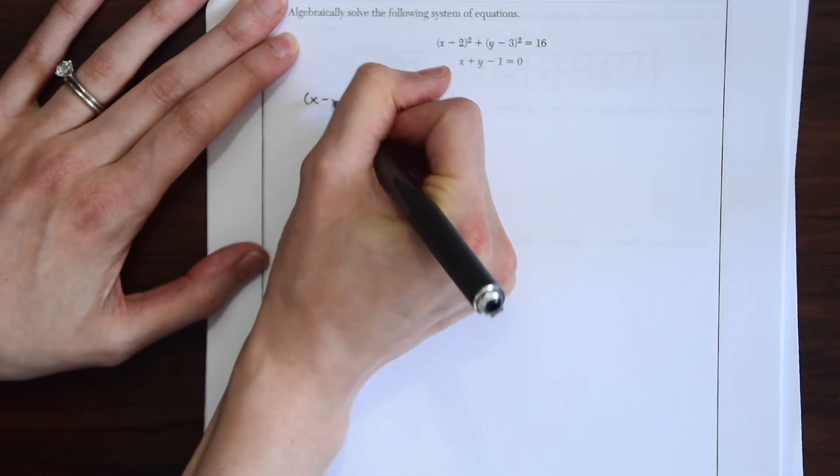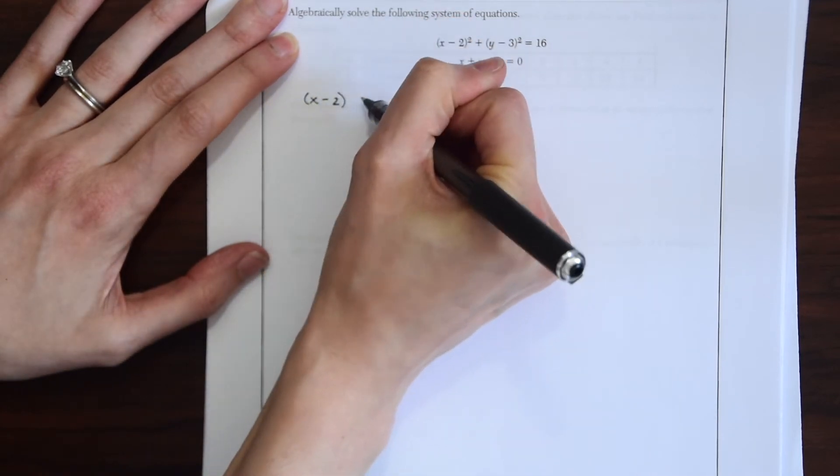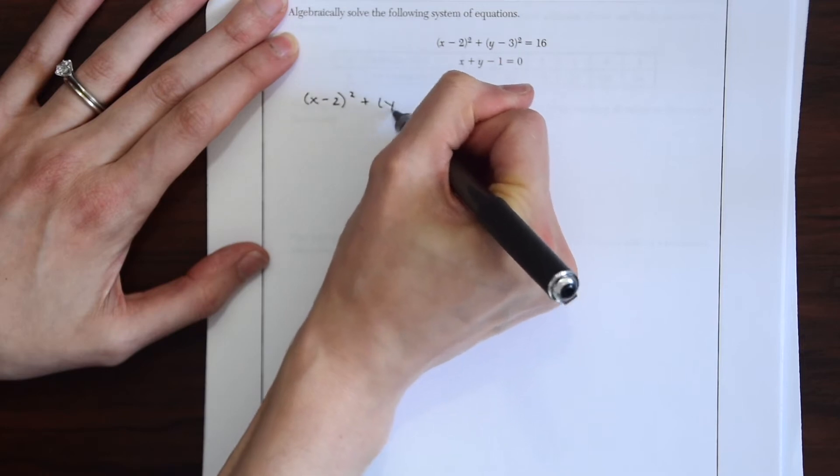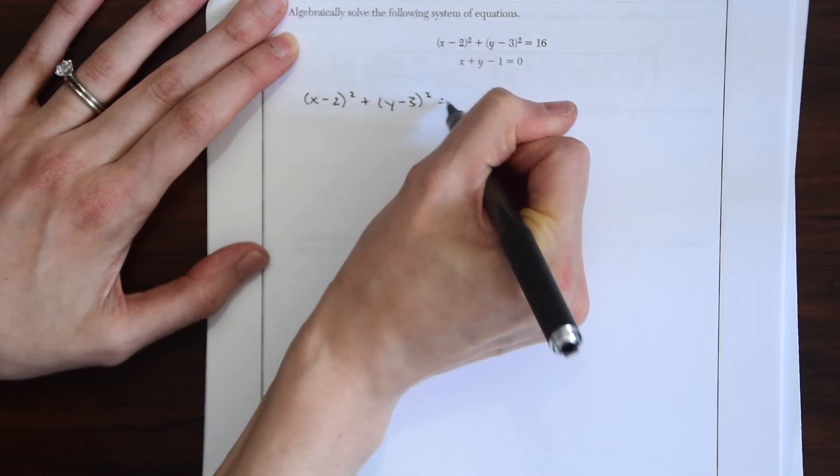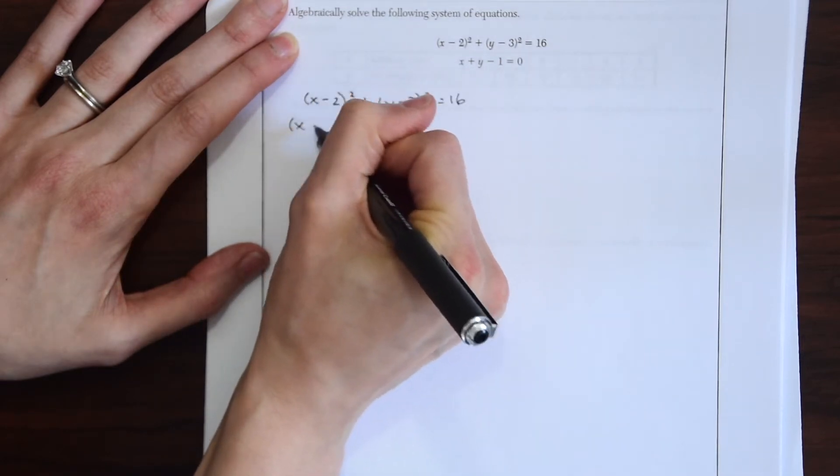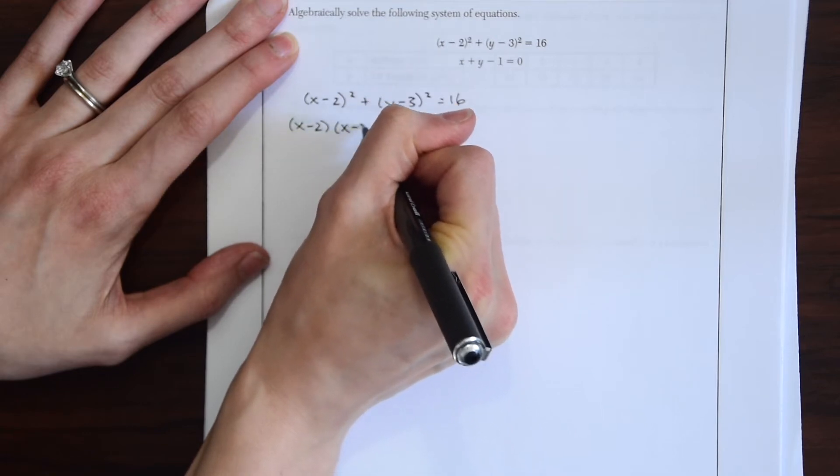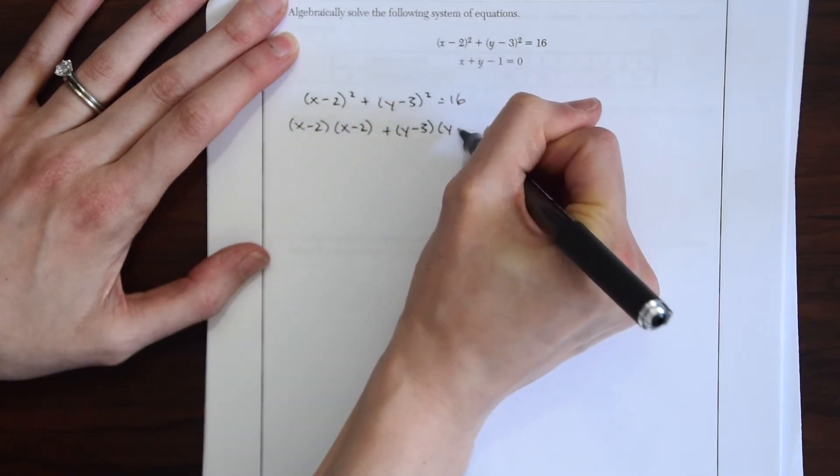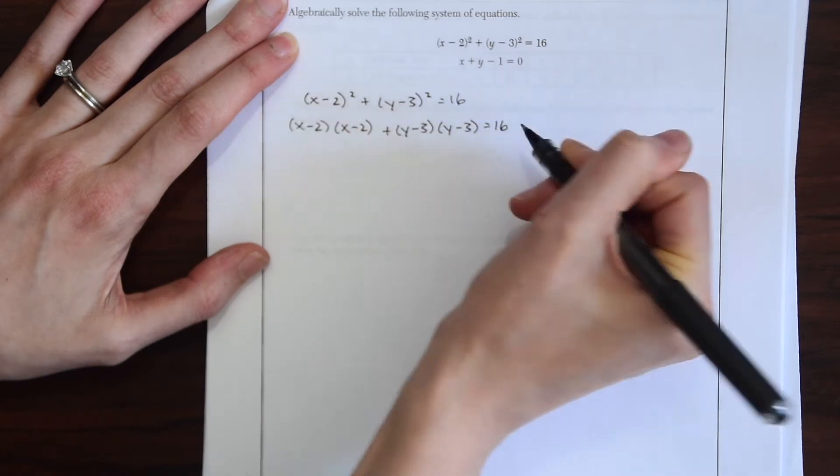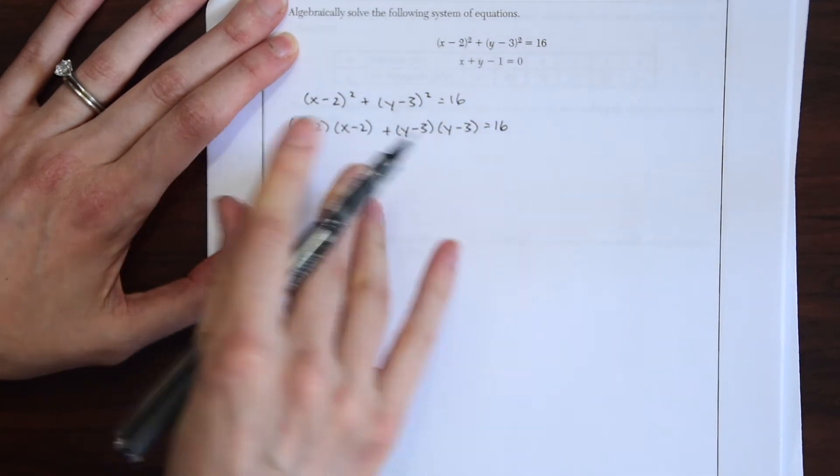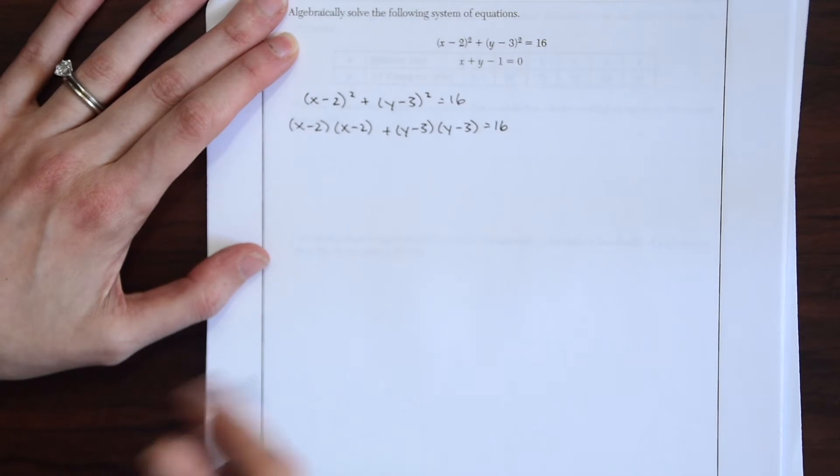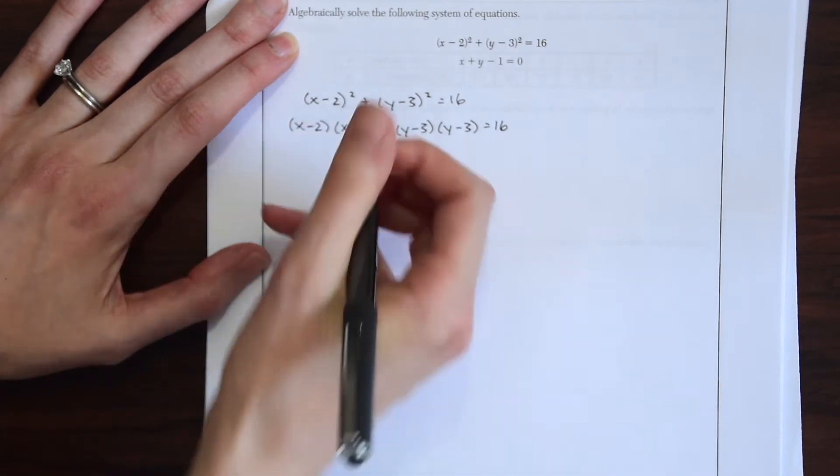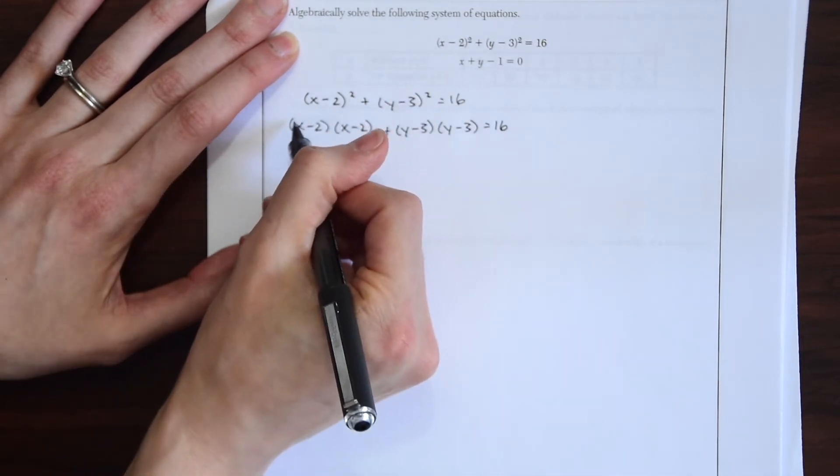So let's expand all these binomials. We have x minus 2 squared plus y minus 3 squared equals 16. So let's expand this to x minus 2 times x minus 2 plus y minus 3 times y minus 3 equals 16. And now we're just going to use FOIL or the distributive property of the box, whatever works best for you to expand binomials. So I'm just going to do this kind of quickly.